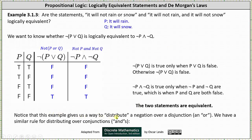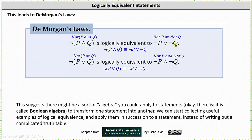This example gives us a way to distribute a negation over a disjunction (an 'or'). We have a similar rule for distributing over conjunctions ('and'), which leads us to De Morgan's laws. The first law states: the negation of (p and q) is logically equivalent to the negation of p or the negation of q. To go from the left statement to the right, the negation passes across the parentheses and applies to p, then the 'and' changes to 'or', then we negate q. These two statements are logically equivalent, meaning their truth table columns would be identical.